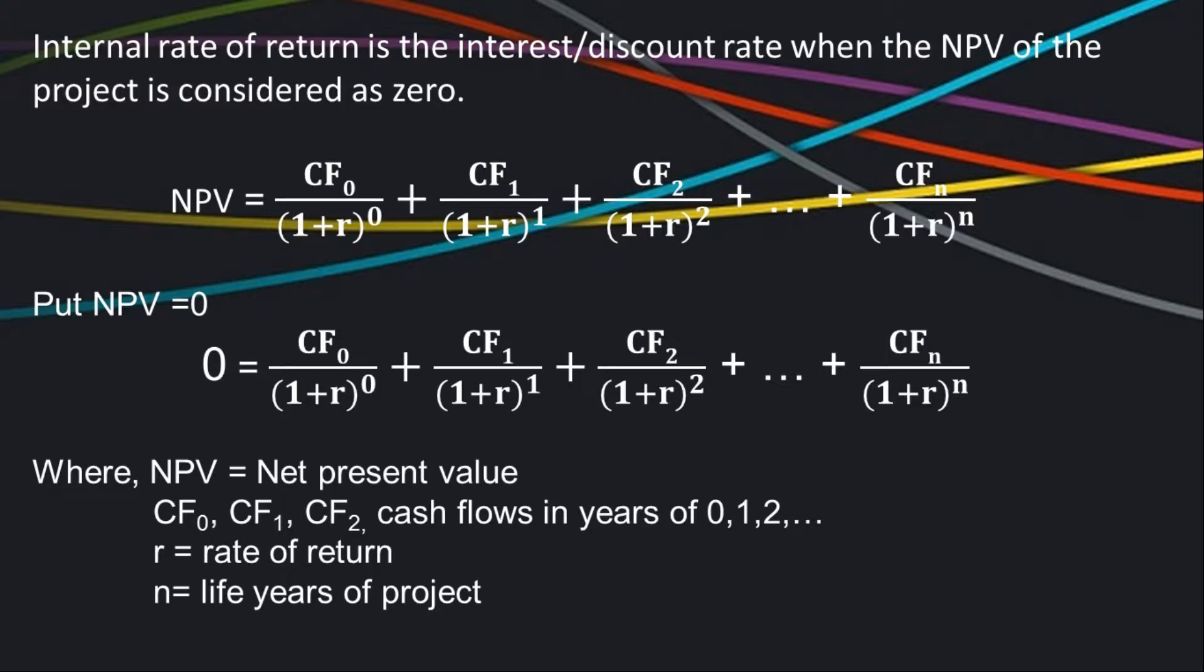For example, CF0 be the cash flow initially and CF1 be the cash flow at the end of first year and so on. Here, r be the rate of return and n be the life years of project.